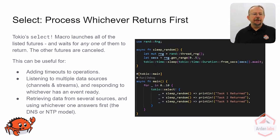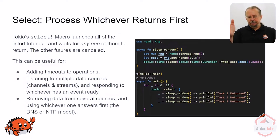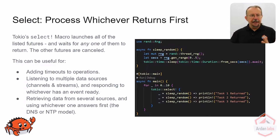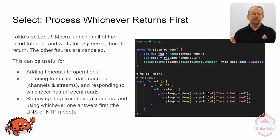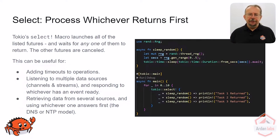The last option that's pretty popular is select. The select macro runs multiple futures, and whichever one finishes first is the answer you get — the others are canceled. Unlike threads, it's very easy to cancel futures. You can just stop them. Tokio will make sure that any dropping that needs to happen to free up your resources will happen.